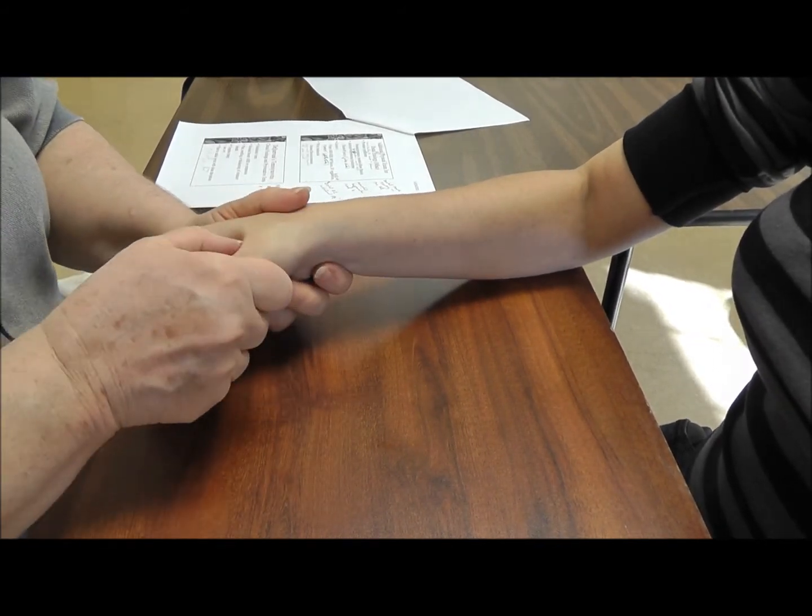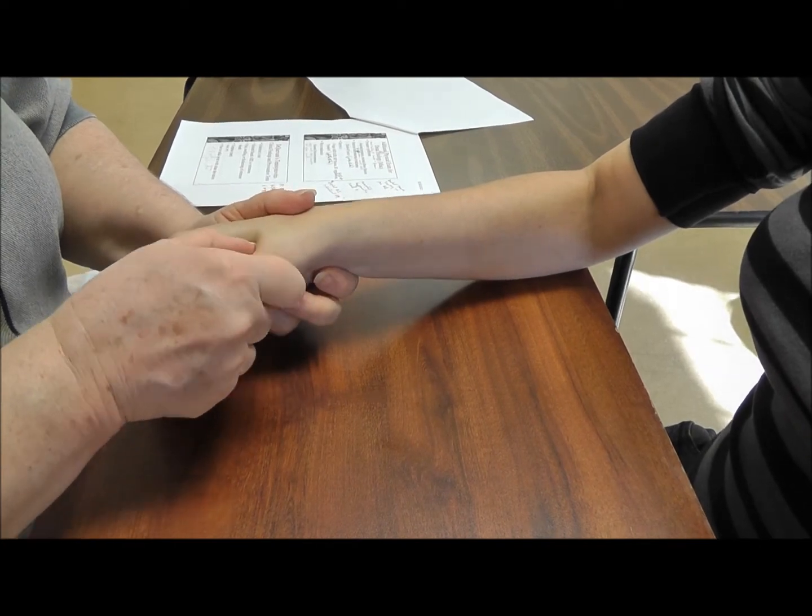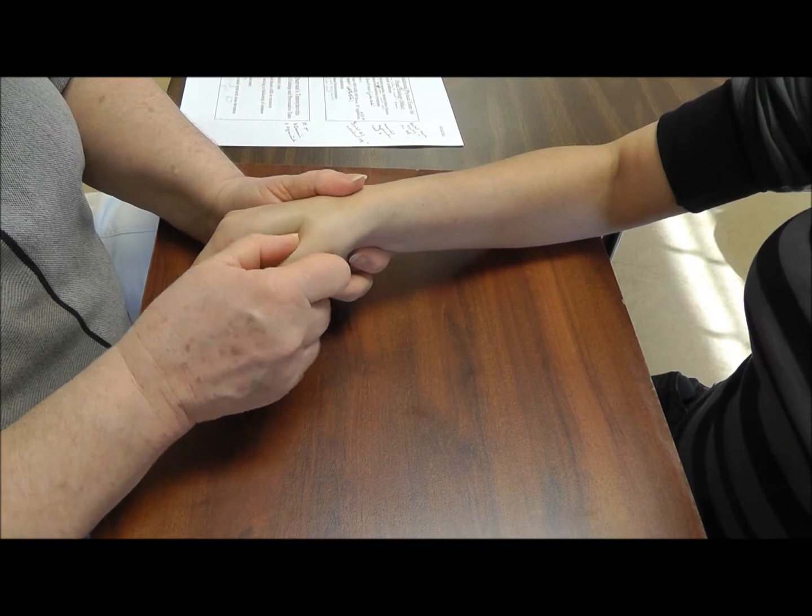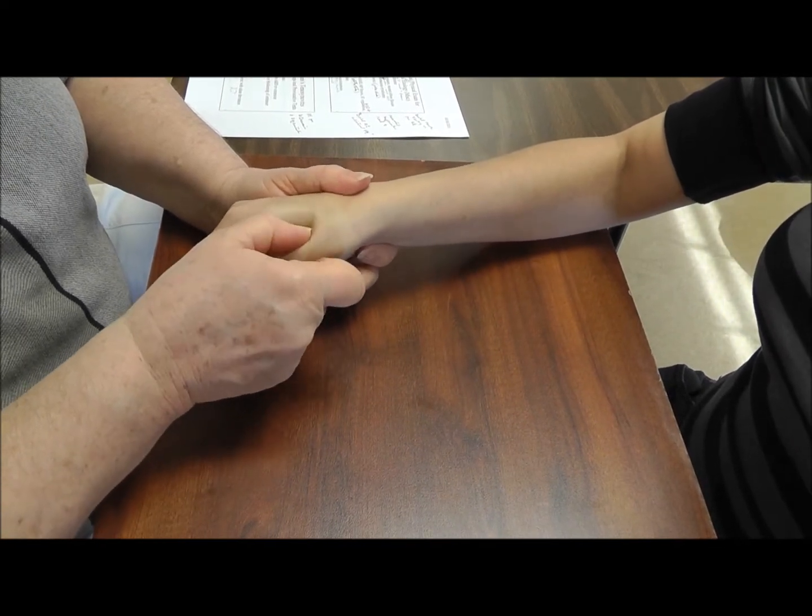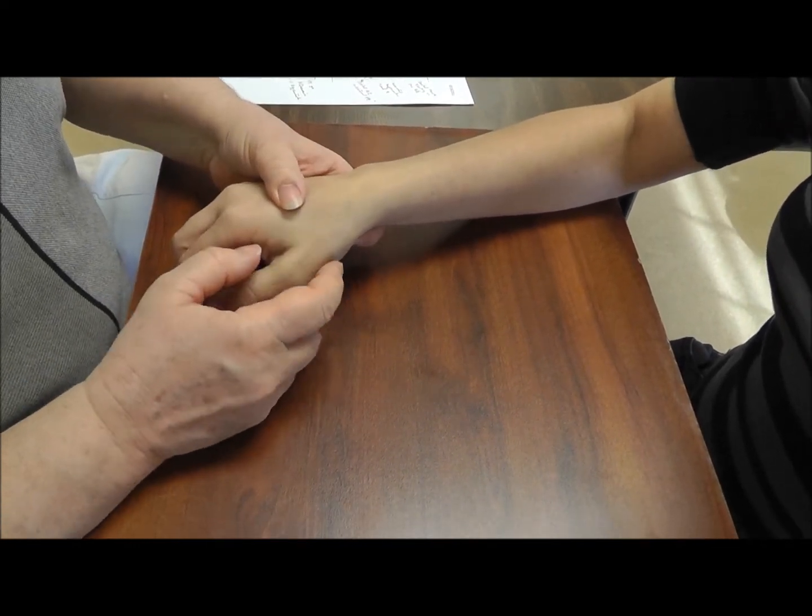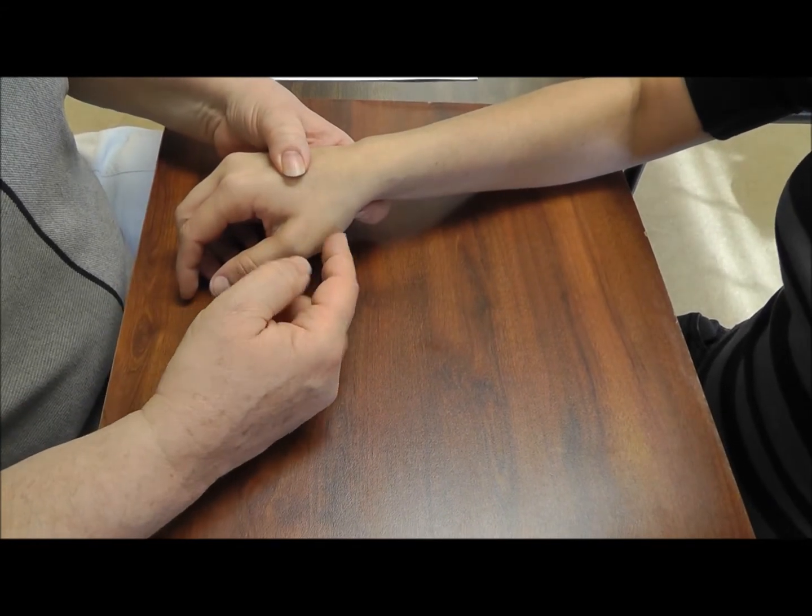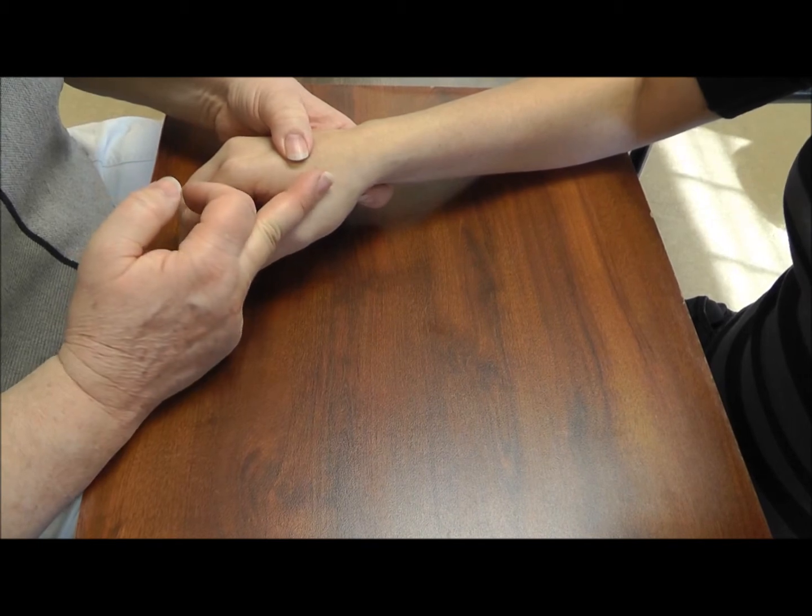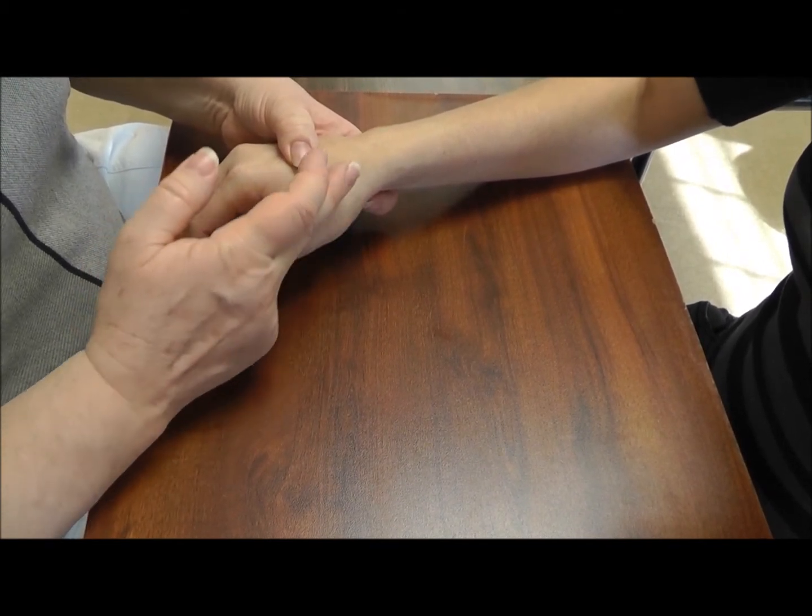So with your palpation here, you can test for hypermobility. See if you can rotate that thumb metacarpal back and forth. So she had a little bit of hypermobility here. You can look for signs of like a subluxation where you just kind of see a lump here where obviously that metacarpal is a bit forward.